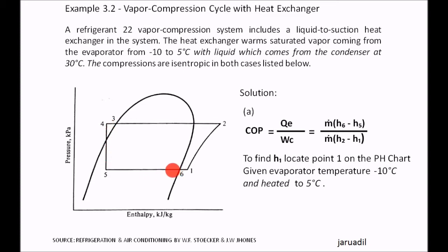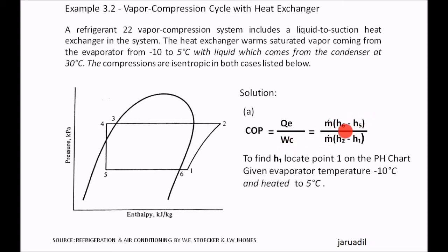1 to 2 is compression. The COP definition remains the same: QE — refrigerating capacity — divided by the work of compression. The refrigerating capacity is mass flow rate times the change in enthalpy from 5 to 6, or H6 minus H5. While the work of compression is mass flow rate times H2 minus H1. The COP equation has not changed. To find H1, locate point 1 on the pH chart given evaporator temperature negative 10°C and heated to 5 degrees Celsius.